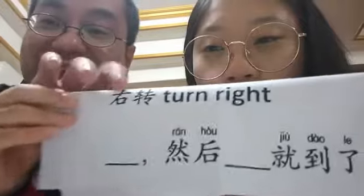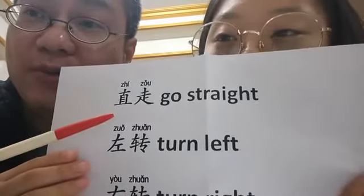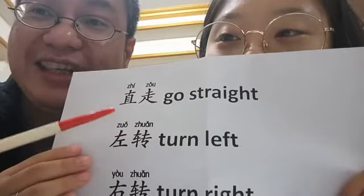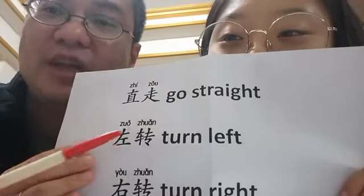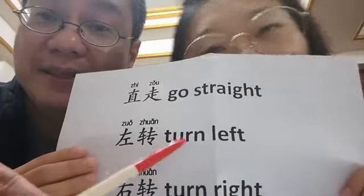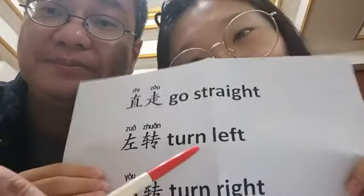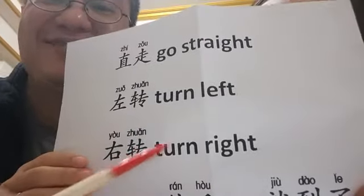So we will review that again. 直走 — go straight. 左转 — turn left. 右转 — turn right.